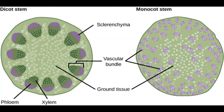First, we will talk about non-vascular plants. When plants first went on land about 500 million years ago, they were very simple. Modern plants use special tissues that allow them to move nutrients, water, hormones, and other things throughout their bodies. This allows them to transport their nutrients for far distances, which allows them to grow big and tall. These tissues are called vascular tissues, hence vascular plants. The non-vascular plants did not have these, which is why they only grew a few inches.